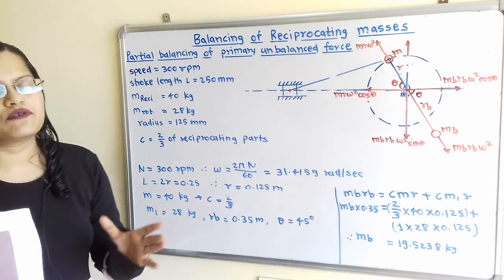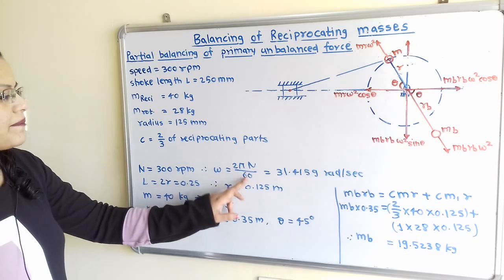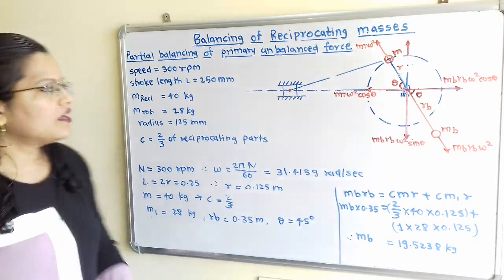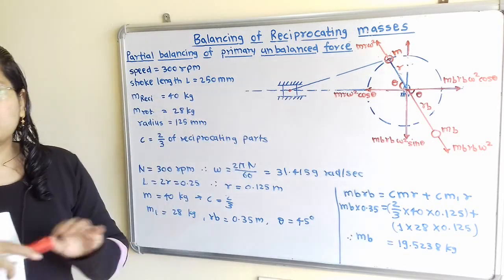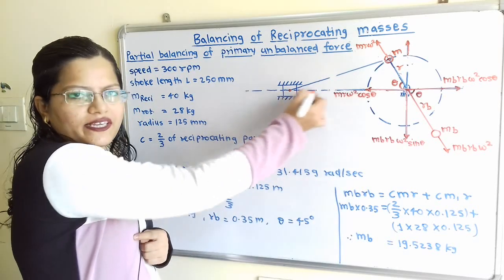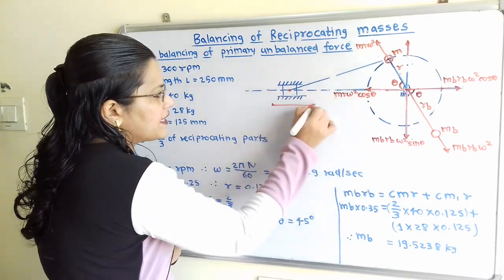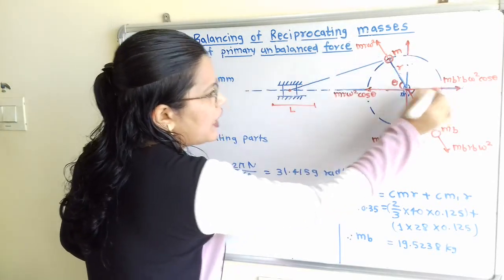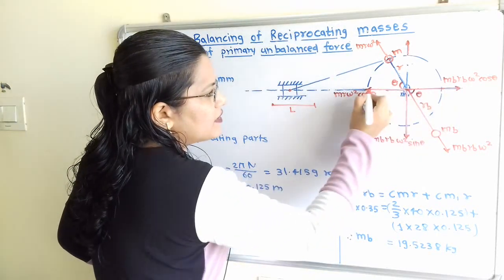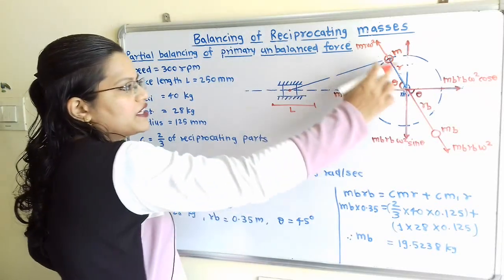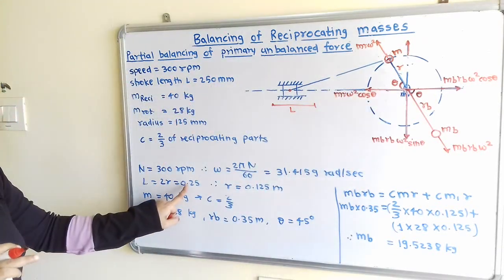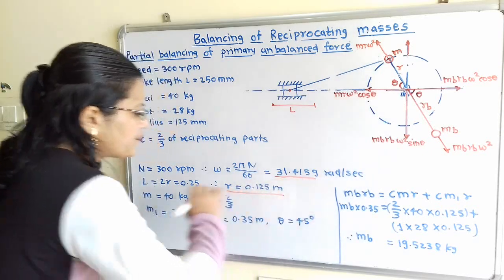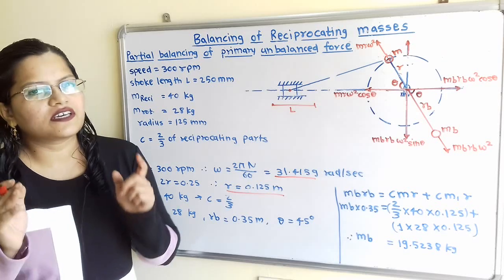From the given data: speed N = 300 rpm, so angular velocity ω = 2πN/60 = 31.4159 rad/s. The stroke length is 250 mm. Since stroke length L = 2R, we get R = 0.125 m. This is the crank radius used in calculations.